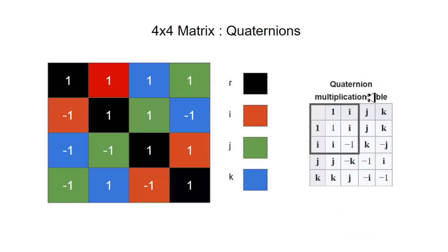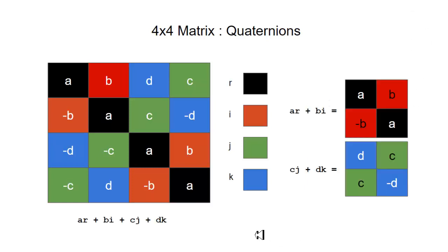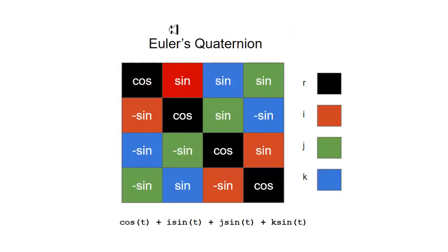Here are the rules of the quaternions compared with the rules of complex numbers. Multiplying this 4x4 matrix reproduces the quaternion table: 1 squared equals 1, I squared equals minus 1, J squared equals minus 1, and K squared equals minus 1. Here is the algebraic representation of the 4x4 matrix, with the A-B matrix and the C-D matrix placed in their respective positions.